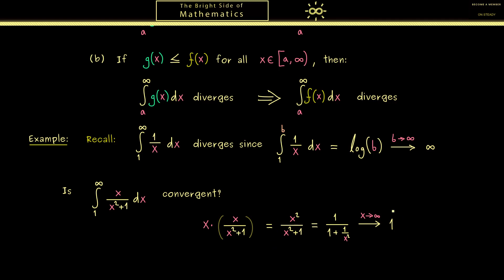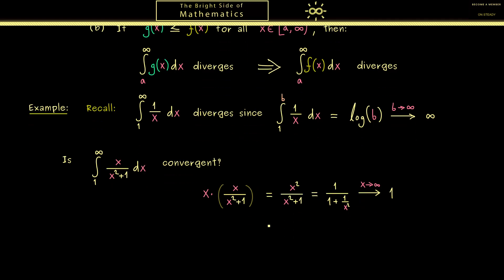However, of course the limit is not enough, we need a concrete minorant function. But the important thing now is that we can construct one. Namely, this limit here tells us that eventually this whole thing here is greater than 1 half. And here, please recall eventually means that we find a bound such that after this bound it holds for all numbers x that are greater than this bound. Please note here it is only important what happens eventually.